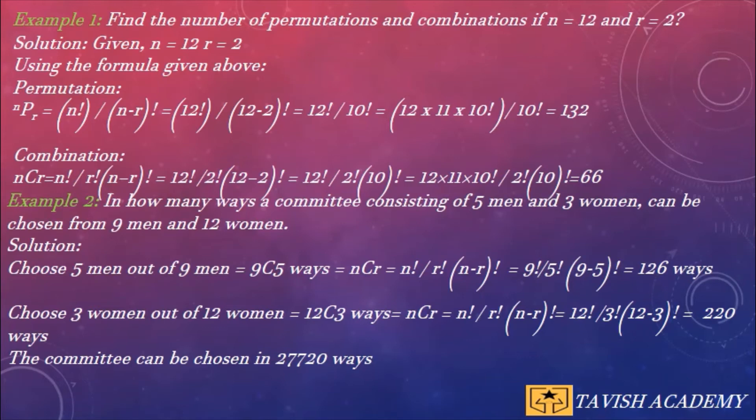Example 2: In how many ways can a committee consisting of 5 men and 3 women be chosen from 9 men and 12 women?